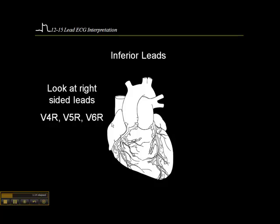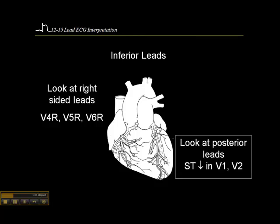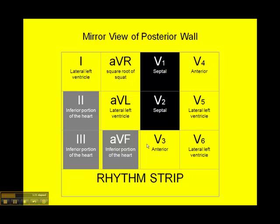In this case, we only need to see ST segment elevation in one lead, not two anatomically contiguous leads. Because the RCA also feeds the posterior wall and both the right and left ventricle, we look for evidence of posterior wall infarct in the form of ST depression in V1 and V2. That's because V1 and V2 are anterior leads looking at a posterior wall infarct. So we look at ST elevation in 2, 3, or AVF — two of those leads — and depression in V1 and V2, which would suggest a posterior wall infarct.